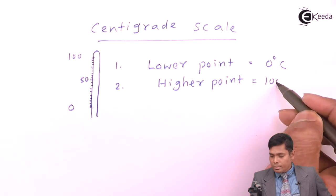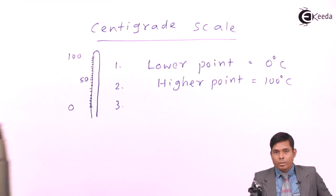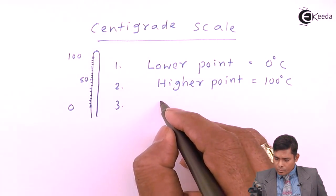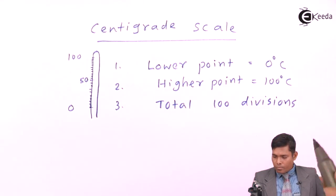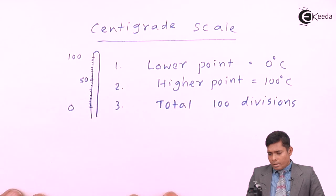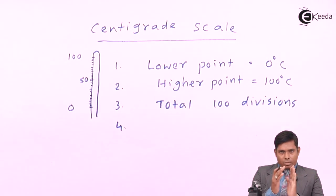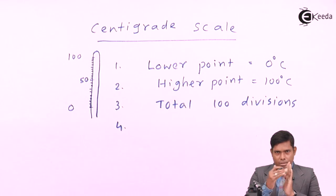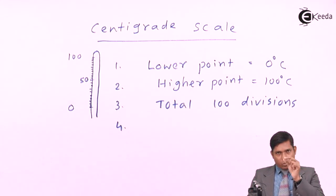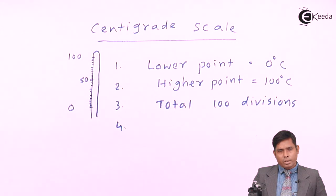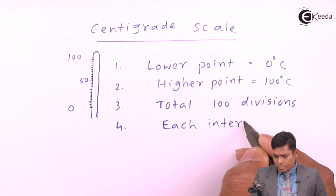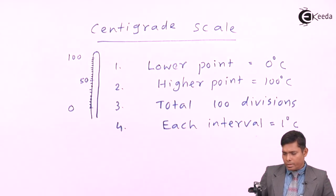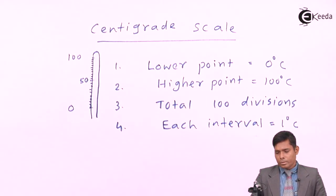The higher point is 100 degrees centigrade. There are 100 divisions in total, and each interval — that means the gap between two consecutive lines or graduations — gives you one degree centigrade. So each interval equals one degree centigrade. This is what you have to note about the centigrade scale.